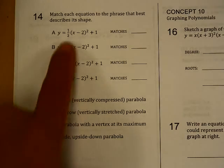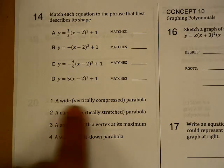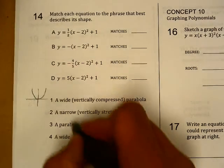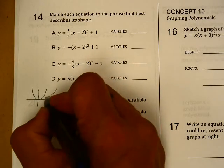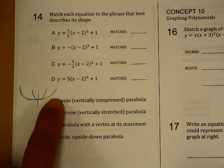So let's look at either, let's start with what we're looking for. A wide, vertically compressed parabola. So I start with my original parabola like this, and I want it to go wider. That means I'm going to have a fraction.